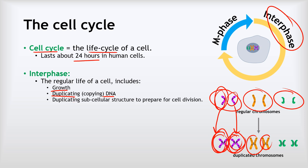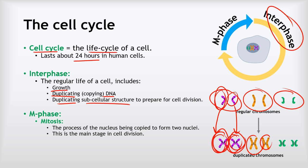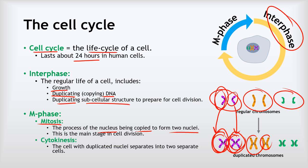During interphase, subcellular structures are also duplicated — extra ribosomes, mitochondria, and so on, ready for mitosis. The second part of the cell cycle is the M phase. In the M phase, first mitosis occurs — the nucleus is copied to form two nuclei. Then cytokinesis takes place: the two nuclei move to opposite ends of the cell, and the cell splits into two separate cells.